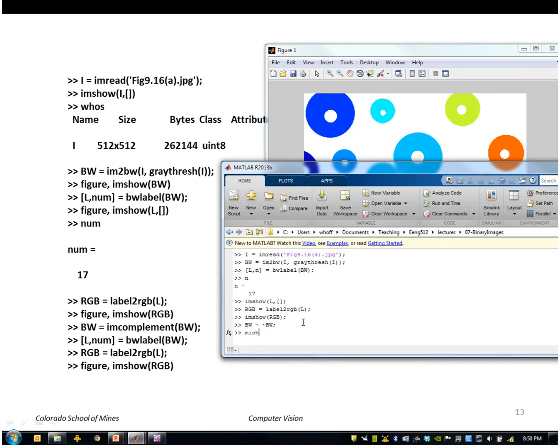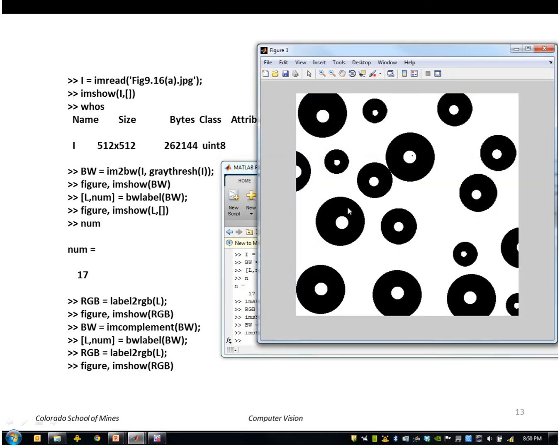So if I show that you can see now the image has white in the centers and black on the outside.